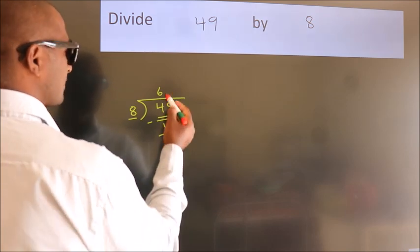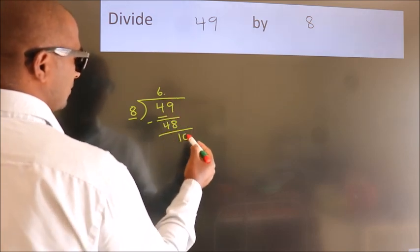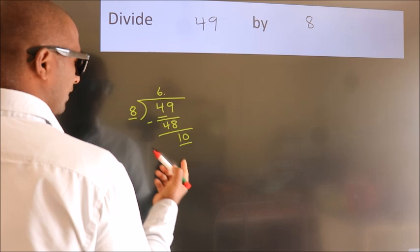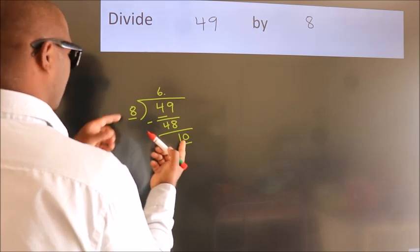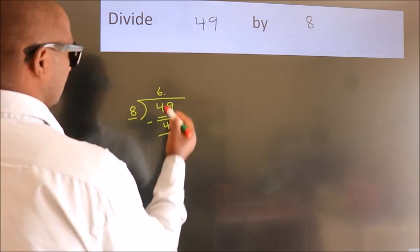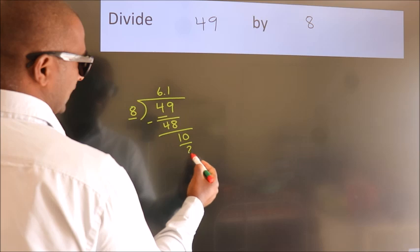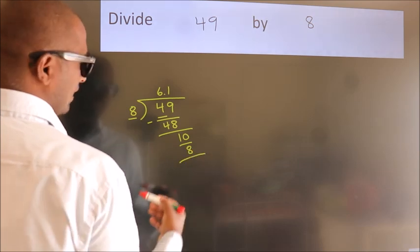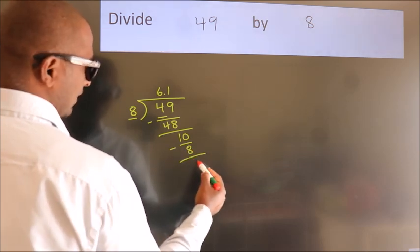So what we do is put a dot and take 0, giving us 10. A number close to 10 in the 8 table is 8 times 1, which is 8. Now we subtract and get 2.